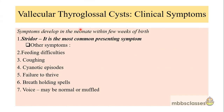These vallicular thyroglossal cysts cause stridor in the neonatal period. The most common symptom is stridor, and most cases present within a few weeks of birth. Other symptoms include feeding difficulties, coughing, cyanotic episodes, failure to thrive, and breath-holding spells in neonates. The voice of these neonates may be normal or they may have a muffled type of voice.